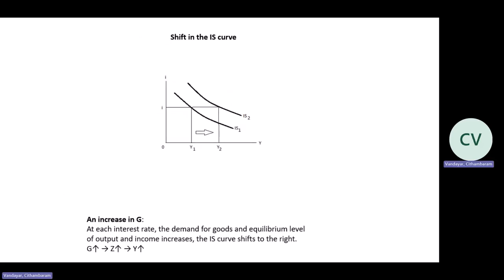Regarding a shift in the IS curve — for example, if there's an increase in government spending, at each interest rate I, the demand for goods and the equilibrium level of income and output increases, and the IS curve shifts to the right. If there's an increase in government spending at interest rate I, there will be a shift in the IS curve from IS1 to IS2, and the level of income and output increases from Y1 to Y2. The chain of events: increase in government spending leads to an increase in demand for goods and output, and the level of income and output increases as well.